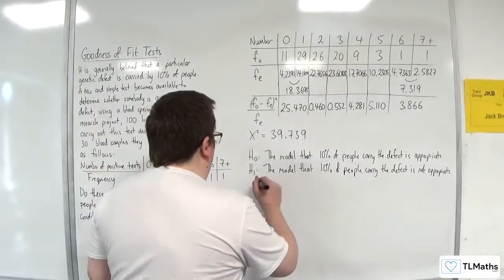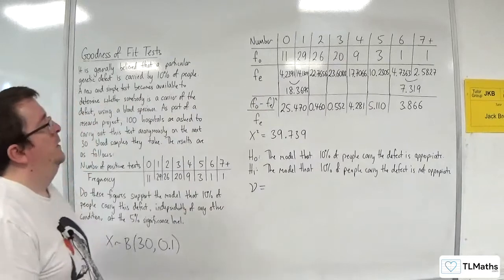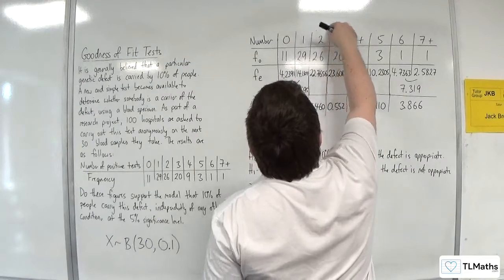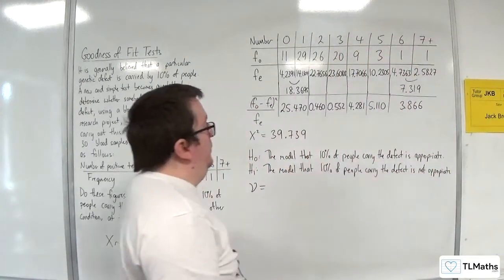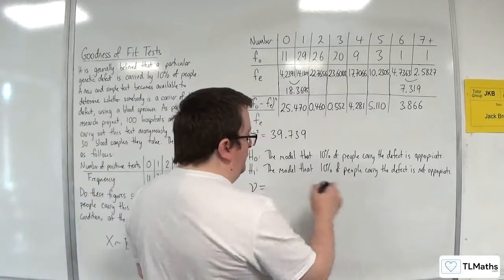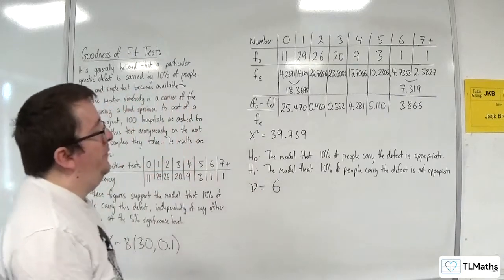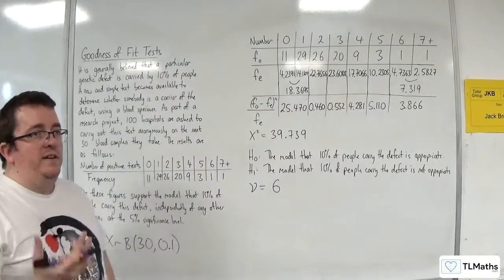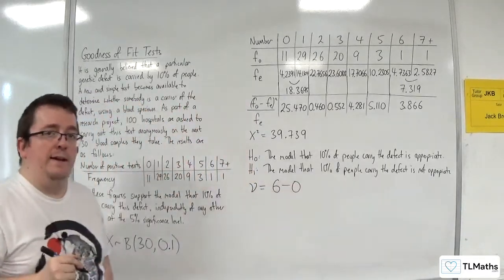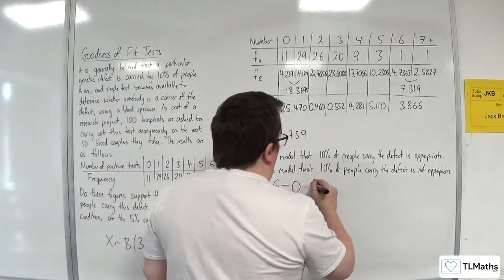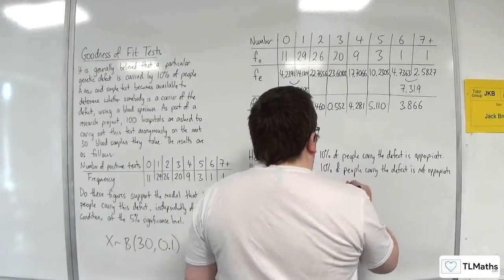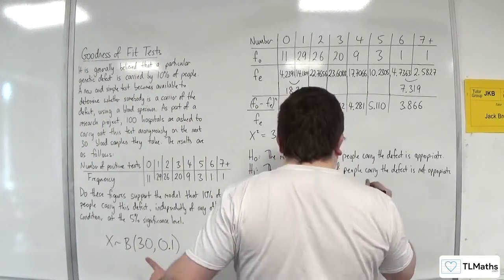So now nu, the number of degrees of freedom. So we started off with 1, 2, 3, 4, 5, 6, 7, 8 columns. But we reduced that down to 6 because we combined columns. So we ended up with 6 columns that we were working with. We didn't need to estimate a parameter. So I don't need to take away anything there. But we do need to take away 1, as we always do. So we're down to 5 degrees of freedom.